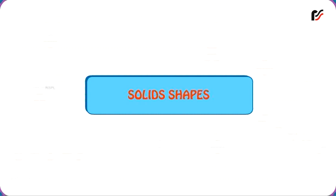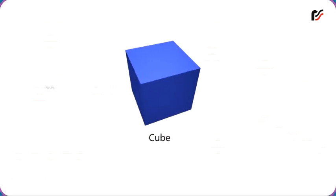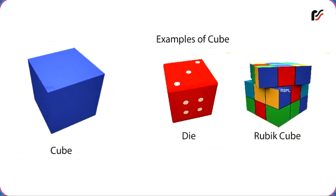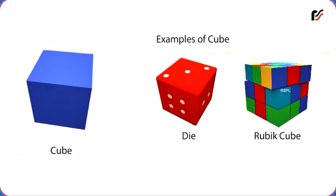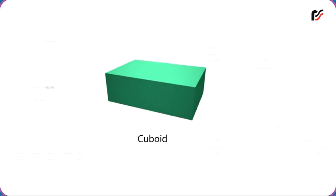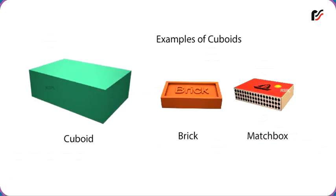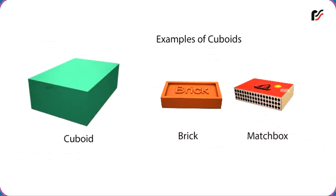Solid Shapes. This is a cube. Dice and Rubik's Cube are examples of cubes. This is a cuboid. Brick, matchbox, etc. are examples of cuboids.